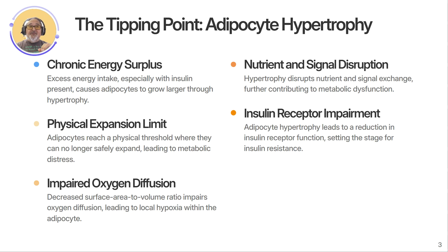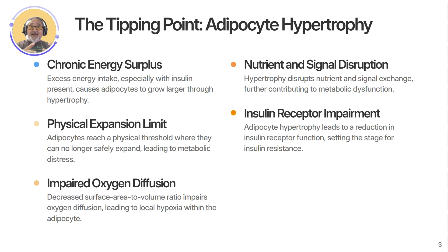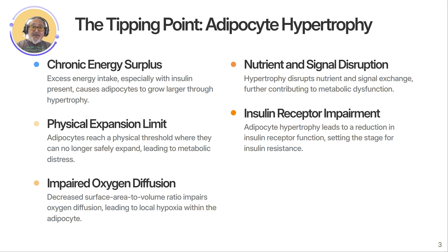One: adipocyte hypertrophy — the tipping point. That's when the fat cells become too big. When you're in a chronic energy surplus, especially with insulin present, adipocytes grow larger through hypertrophy and reach a physical threshold where they can no longer safely expand. Once hypertrophy exceeds a certain limit, the surface area to volume ratio drops, impairing oxygen diffusion — meaning the cell itself suffers from local hypoxia, not enough oxygen. Nutrient and signal exchange breaks down, and insulin receptor function breaks down as well. This over-expansion creates metabolic distress signals inside the adipocyte.